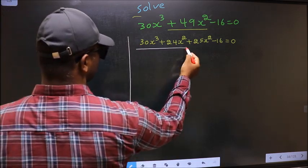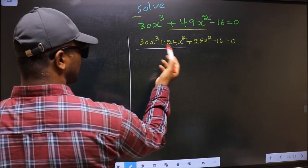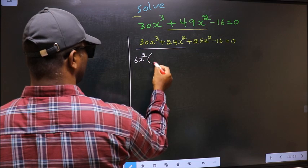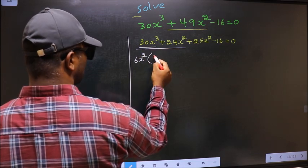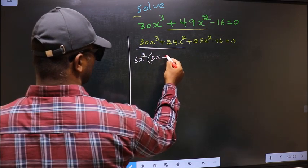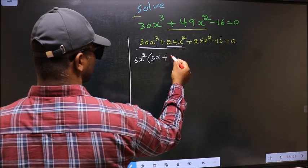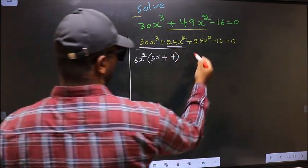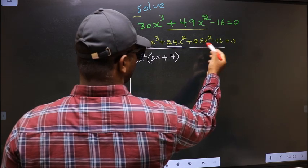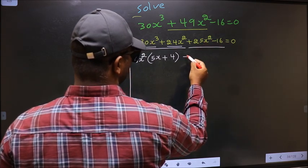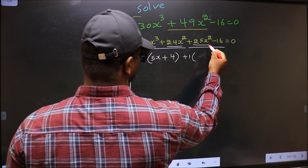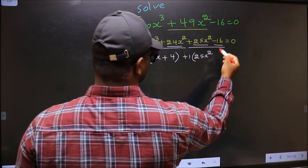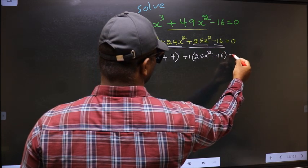From the first two terms, what can be taken out common is 6x². Taking 6x² out, you get (5x + 4). From the next two terms, what can be taken out common is +1, giving 1(25x² - 16).